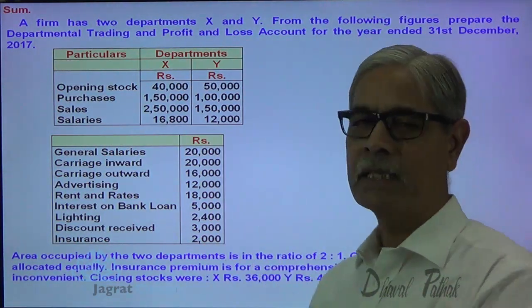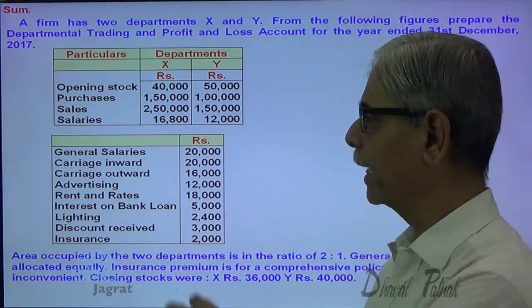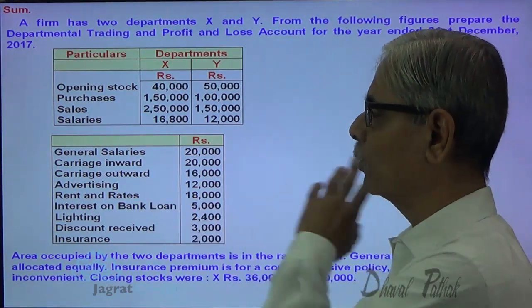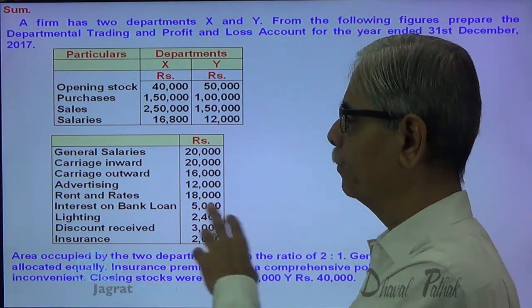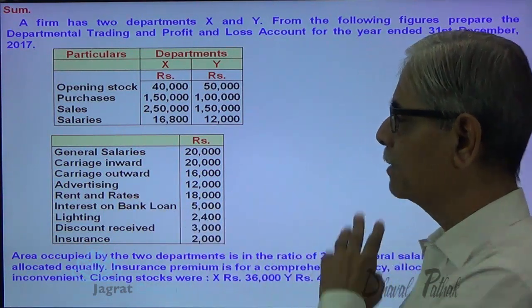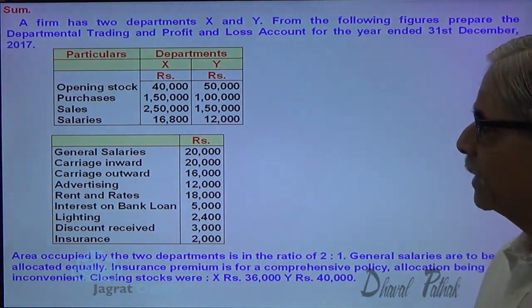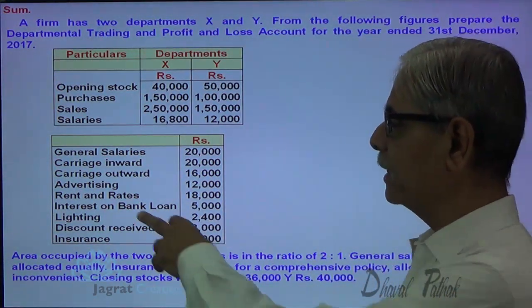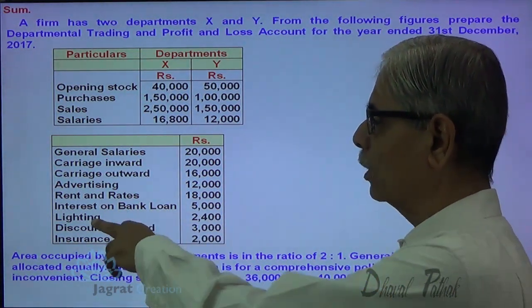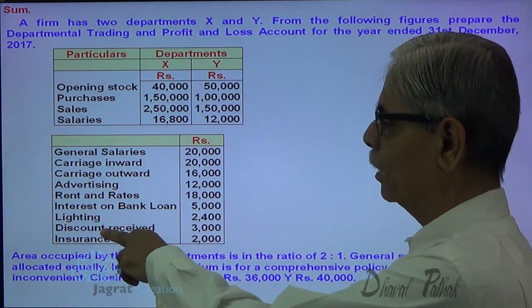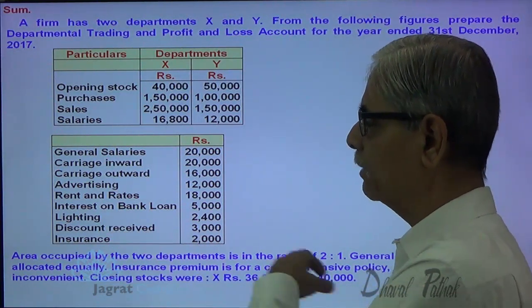These are the common expenses: general salary, carriage inward, carriage outward, advertising, rent and taxes, rent and rates, interest on bank loan, lighting, discount received, and insurance.